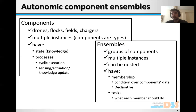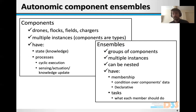Ensembles are essentially groups of components that are dynamically formed at runtime. These are ephemeral groups — they might be formed and deformed very quickly. In our approach, there can be multiple instances of the same ensemble. For example, if an ensemble is formed between a field that needs protection and a number of drones, there might be many fields needing protection, so many ensemble instances will be formed.